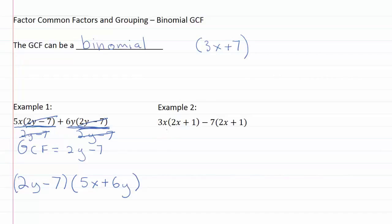In this example we've got 3x times 2x plus 1 minus 7 times 2x plus 1. So our GCF in this case, the thing that matches on both sides, is going to be 2x plus 1.